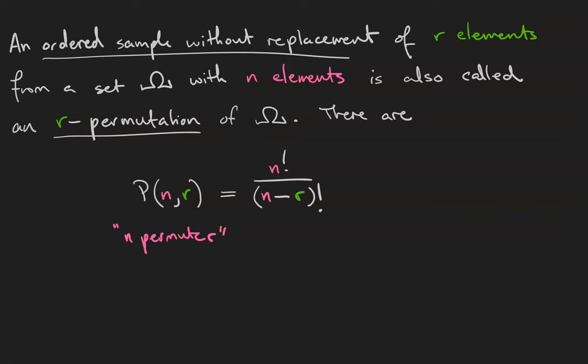A really good question to ask here is: is the number of n-permutations equal to n factorial? Because it should be. Let's calculate n permute n.